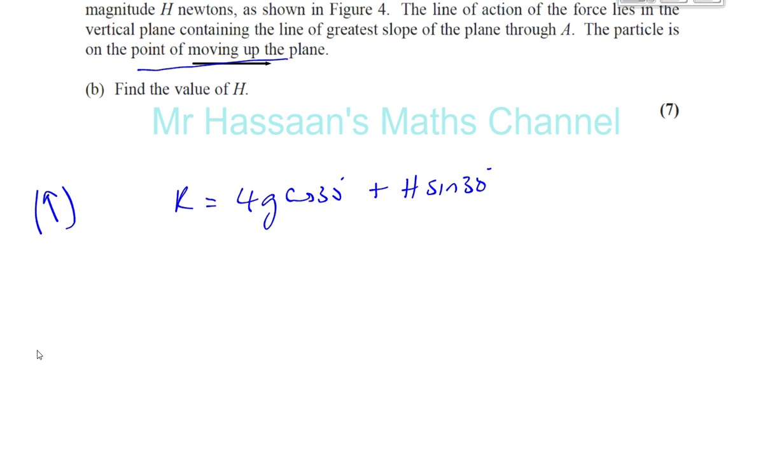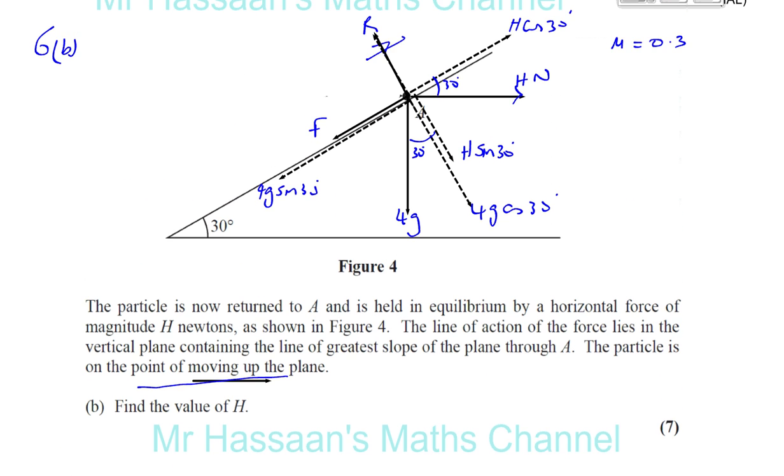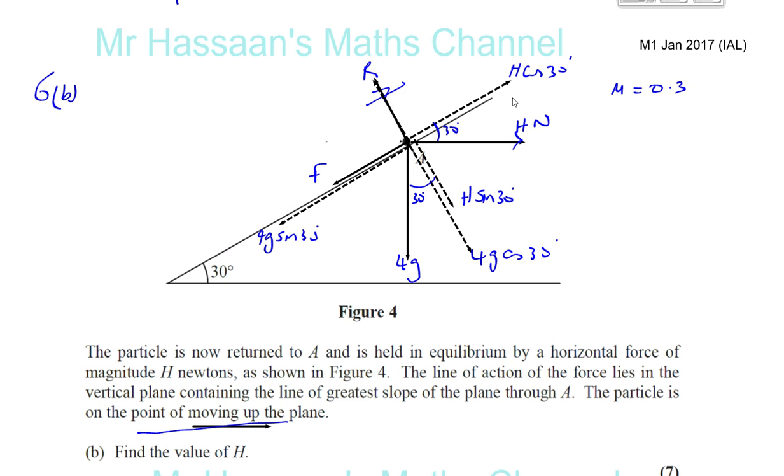And I'm going to resolve taking up as positive, up the plane as positive. Why? Because it's wanting to move, it's on the point of moving up the plane. So I'll say H cosine 30 is equal to 4G sine 30. Those are the two forces acting, or the components of the forces acting parallel to the plane. You've got this acting, you've got the component of H up the plane, and the component of 4G down the plane. And you've also got the friction as well, of course.